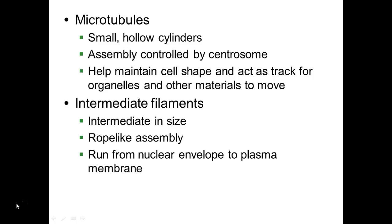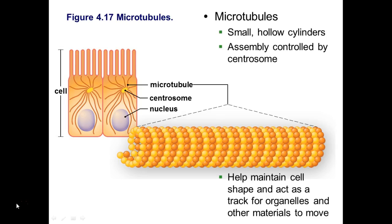First are the microtubules. They're small, hollow cylinders. Their assembly is going to be controlled by a centrosome, and they help to maintain cell shape and also act as a highway for organelles and other materials to move. Here you can see the microtubules — these small, hollow cylinders. They're made of a globular protein that's wound around and around. Imagine taking two necklaces and winding them around your finger, pulling your finger out, and everything stays put. You can see the microtubules moving from the centrosome all the way throughout the cell, maintaining cell shape and acting as a track for materials to move.